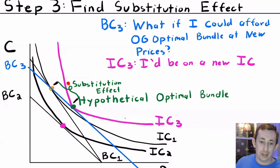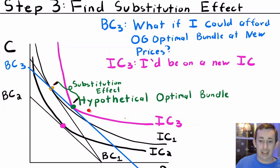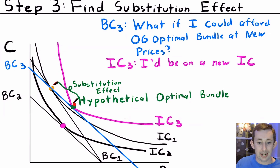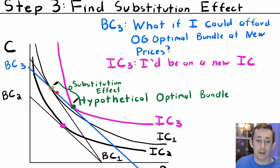BC3, the parallel budget constraint that passes through the original orange OG point, is not tangent to the original indifference curve anymore, so we must be on some higher indifference curve — IC3. That means if I could afford the orange bundle at the new prices, I probably would not buy that original bundle; I would buy some other bundle on a higher indifference curve. The optimal point between BC3 and IC3 is this green bundle — the hypothetical optimal bundle — because no one is actually handing me money when prices change. The difference between the orange bundle and the green bundle is the substitution effect.